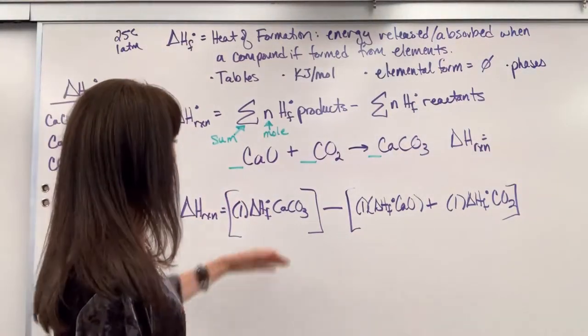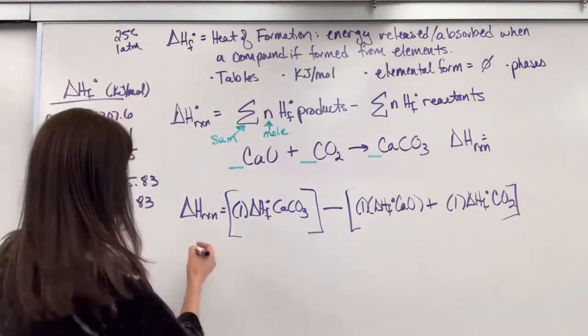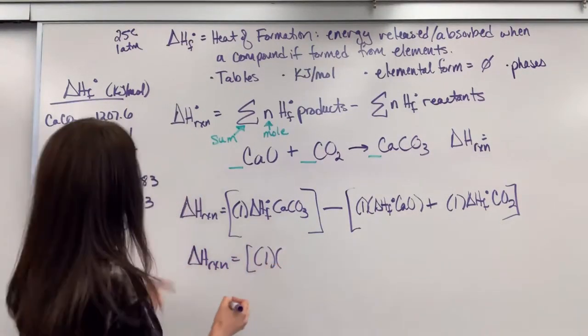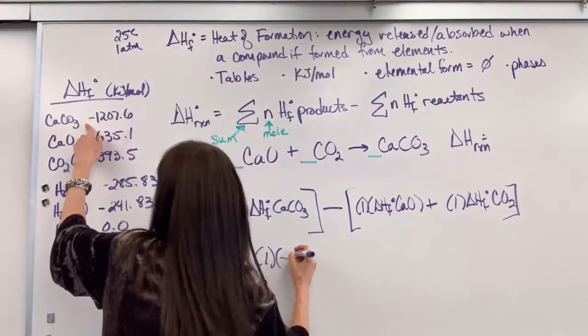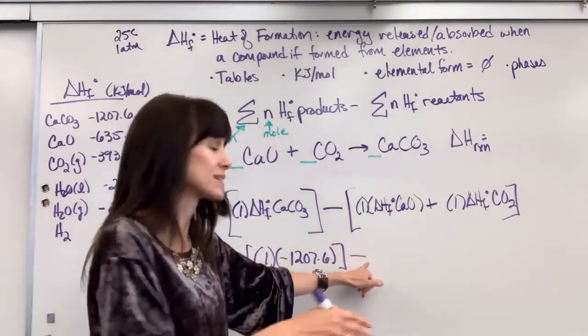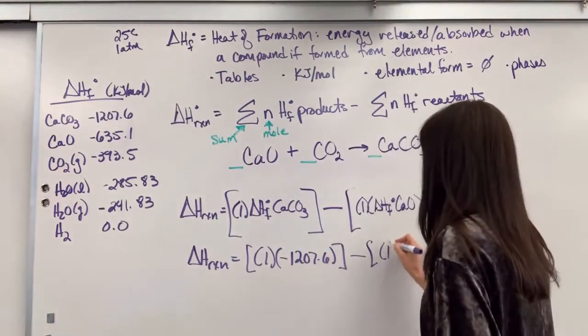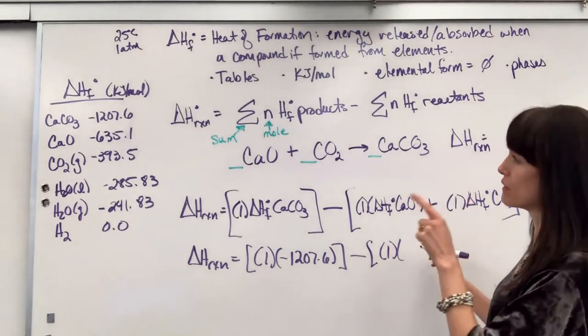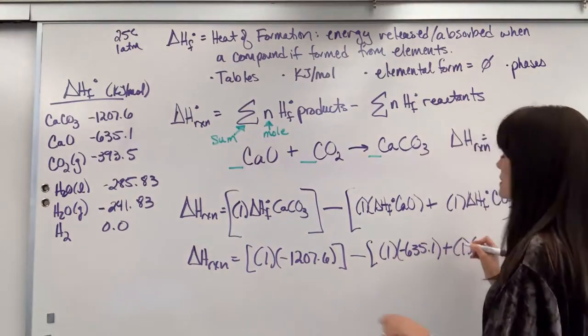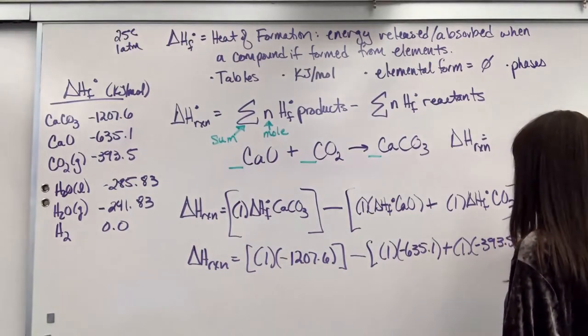Now I just look at my table. So you'd flip to your table, find these numbers, and I substitute in the values for the heats of formations of those compounds. So the heat of reaction is going to be one times calcium carbonate, negative 1207.6 minus, and be really careful, products minus reactants, treat that mathematically. One times heat of formation of calcium oxide, negative 635.1, plus one mole times heat of formation of CO2, negative 393.5.